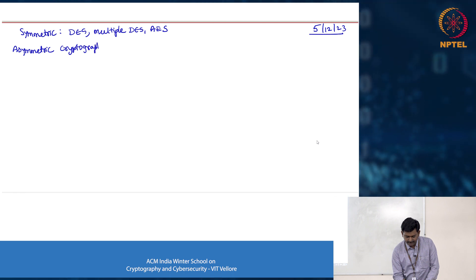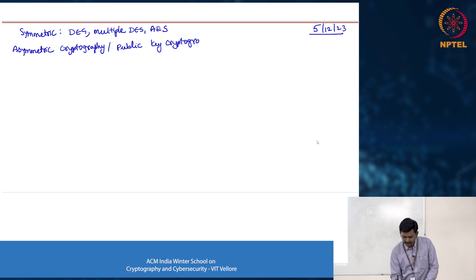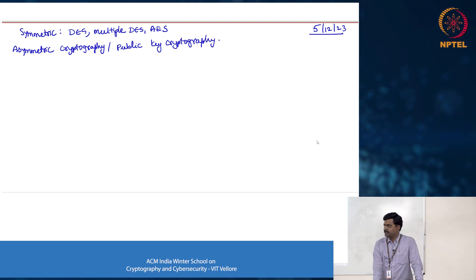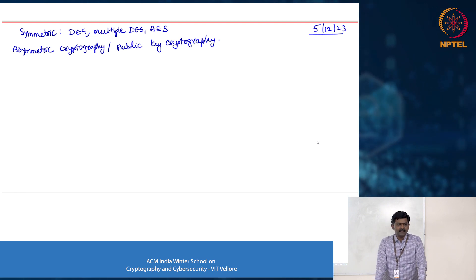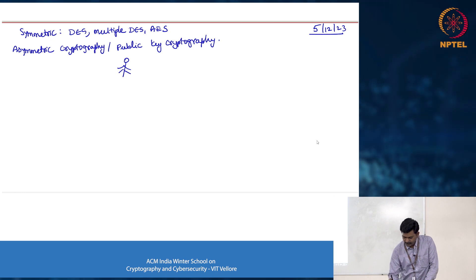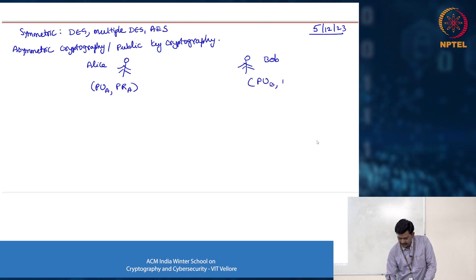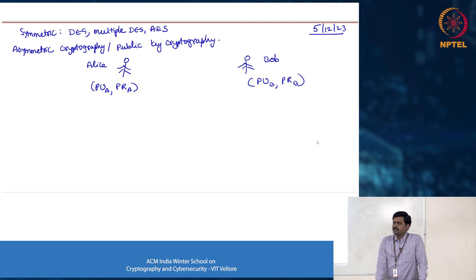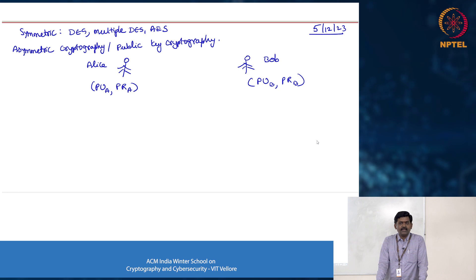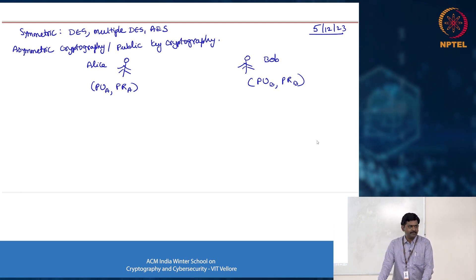Asymmetric cryptography is also known as public key cryptography. It is called public key cryptography because you are encrypting with the public key and decrypting with the private key. There is a sender and a receiver — Alice and Bob. Alice has a key pair: public key and private key. Bob also has a key pair: public key and private key. In asymmetric cryptography, every communicating user will have a key pair.